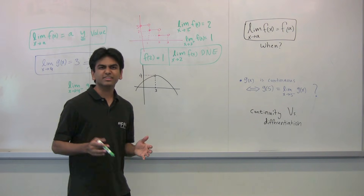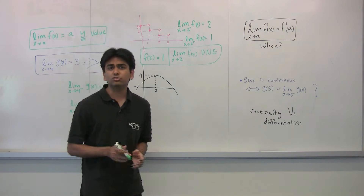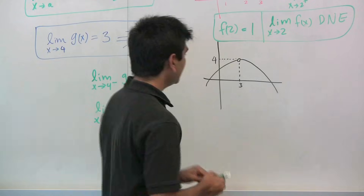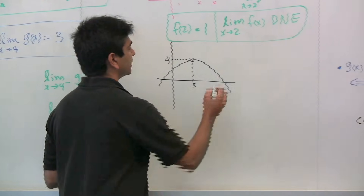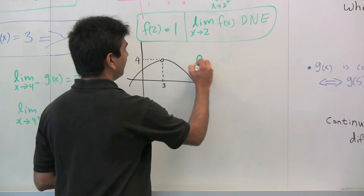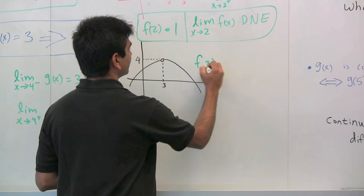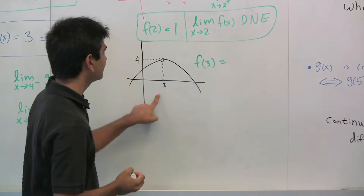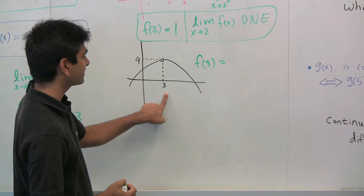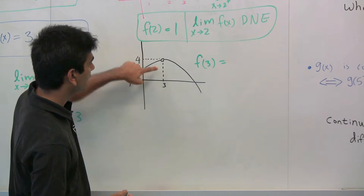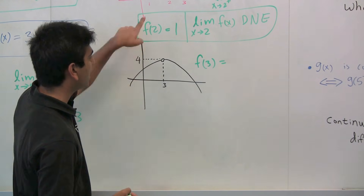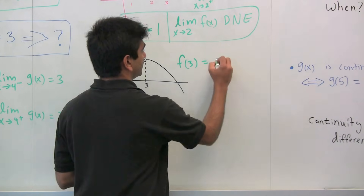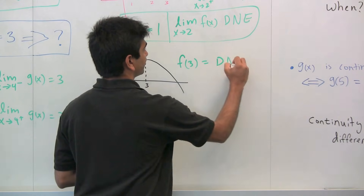Now let's look at another example where the situation is a little reversed. If we ask what f of 3 is, we see that it doesn't exist, because at x equals 3 there is no y-value.